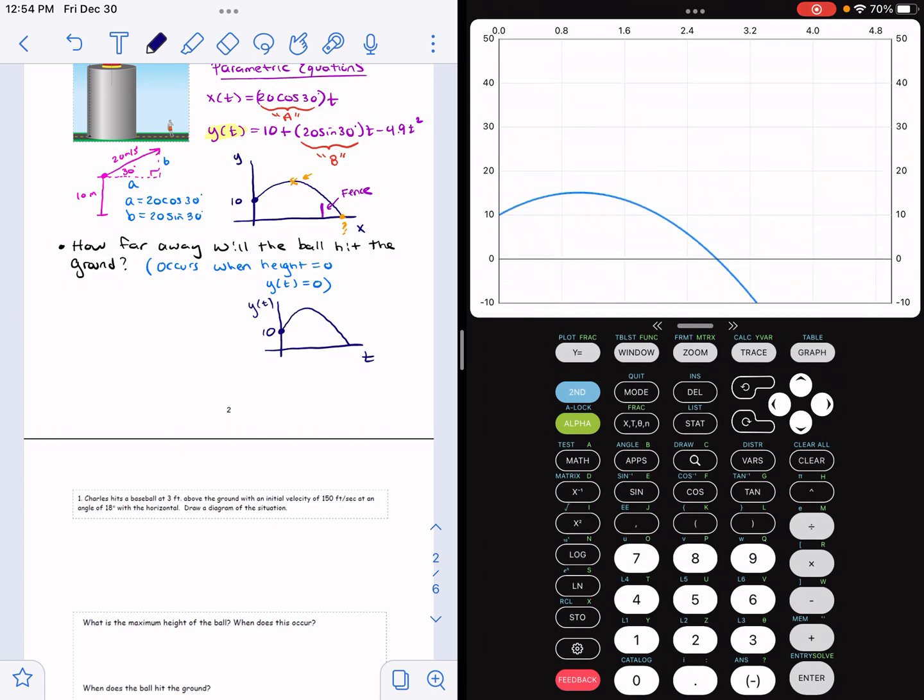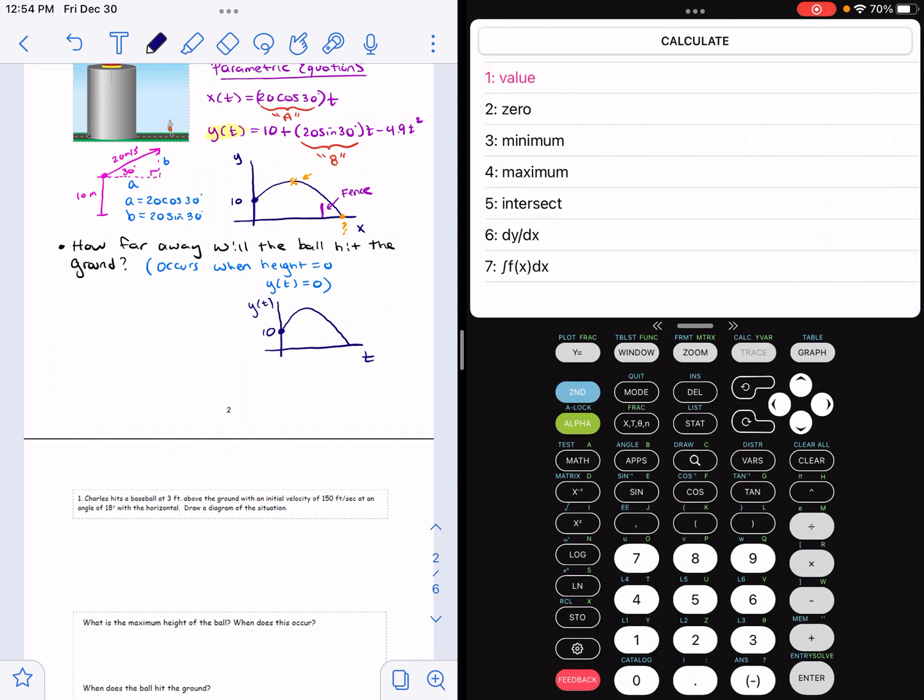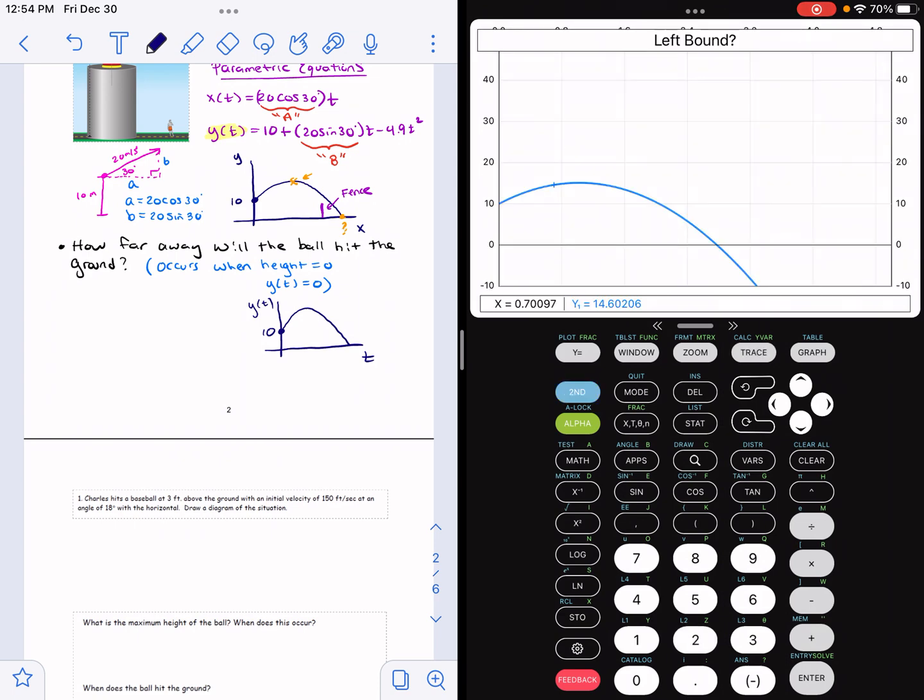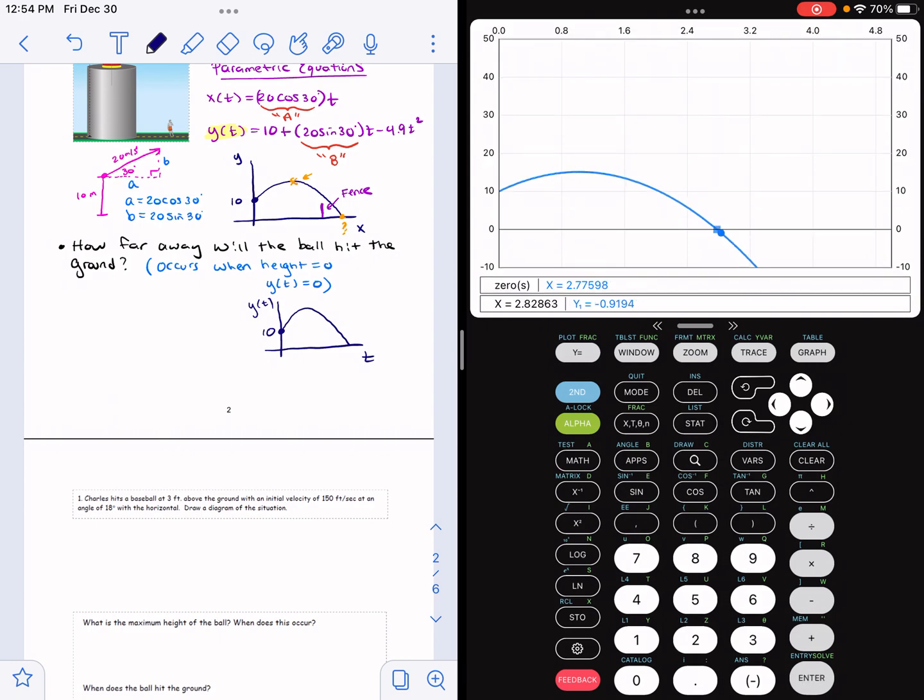Okay, clear the computations there. All right, so there it is. So what am I interested in here? How far away will the ball hit the ground? So I need to know when it hits the ground. So I need to calculate a zero. I need to calculate this x-intercept. So second, calculate, and zero. Okay, so I'm going to have to scroll a little bit until I get a little bit to the left, a little bit to the right of the x-intercept. So a little bit to the right, a little bit to the left. And there it is.